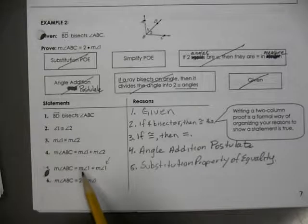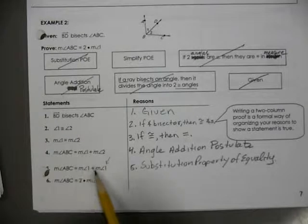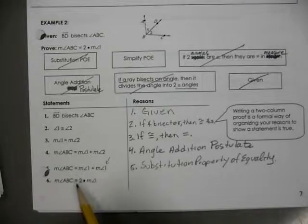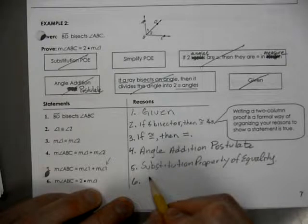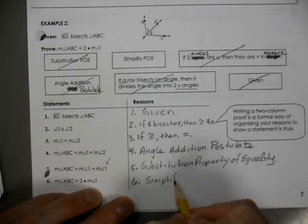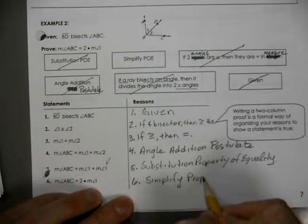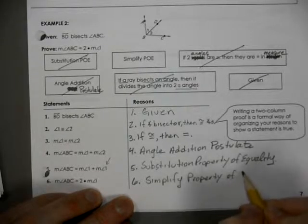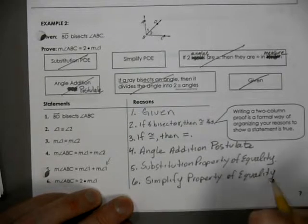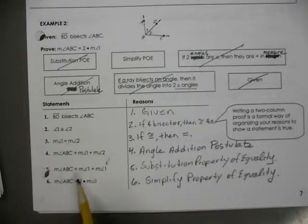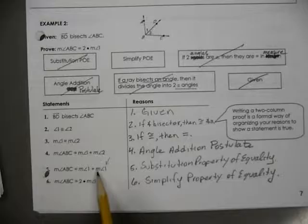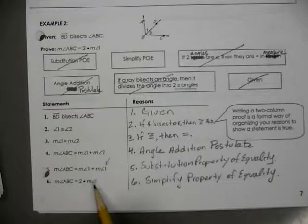We have the measure of angle one plus the measure of angle one, and now we say we have two times the measure of angle one. Earlier in our notes we called that combining like terms — if you have two terms that are the same, like x and x, then you have two x. So the measure of angle one plus the measure of angle one gives you two times the measure of angle one.